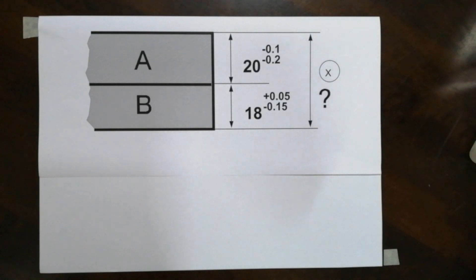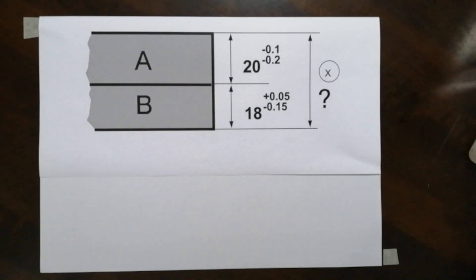Welcome back. This is part two of E-letter three. Now we got two dimensions there, 20 and 18, and it has its tolerance. We want to combine the dimensions. That means in total when you add them up, what is the total dimension?